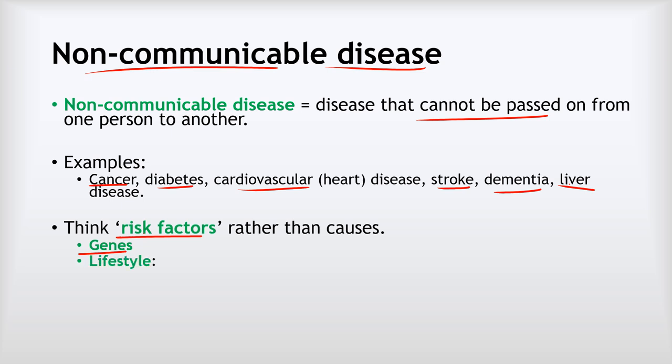The other big set of risk factors is to do with your lifestyle. We can't affect our genes — our genes are our genes, we're stuck with them. However, with lifestyle there are things that we can directly influence, such as your diet, how much exercise you get, whether you drink, smoke, or do drugs. These are all things that are to some extent in our control, though changing them is never easy.